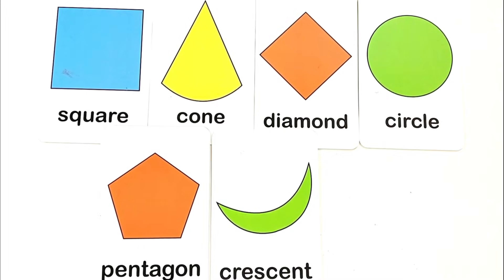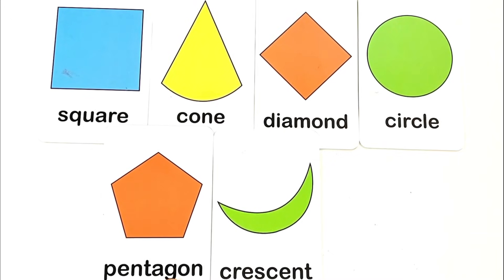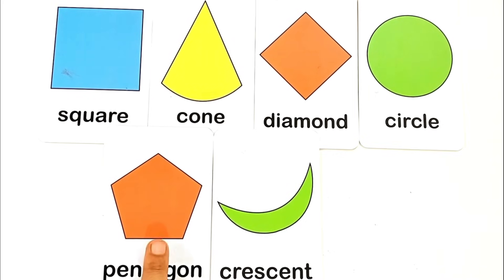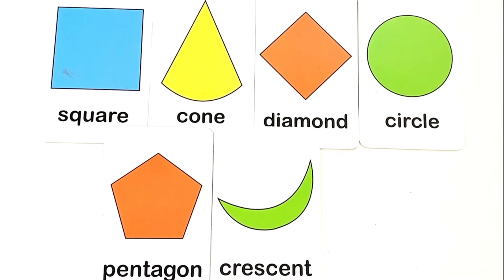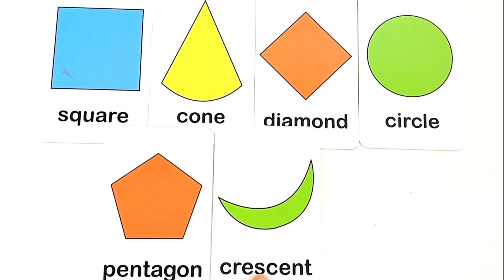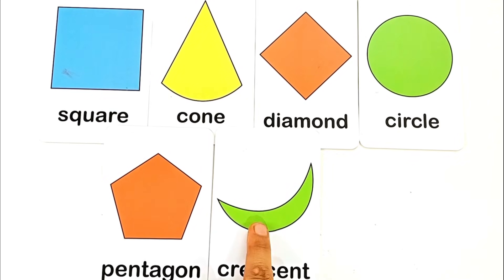P for pentagon. P E N T A G O N, pentagon. This is pentagon shape. C for crescent. C R E S C E N T, crescent. This is crescent shape.